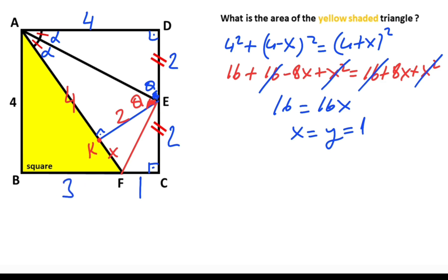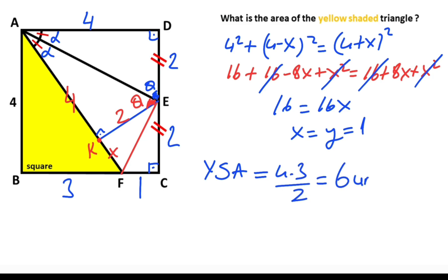Here is 1 and here is 3, so now we can calculate the area of the triangle easily. The yellow shaded area equals 4 times 3 over 2, which means the area equals 6 square units.